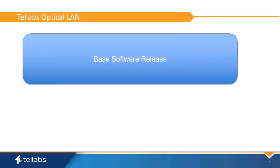At software release 29, Telleb's introduced a scalable software solution. Software is offered in bundles so that customers are not charged for applications they don't need. The software structure starts with the base system software, which provides all the basic LAN needs for system management operations. Additionally, advanced software bundles can be purchased based upon market segment need.